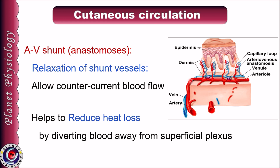Blood from the arteriole flows in one direction, passes through the shunt vessel, and flows in the venule in the opposite direction — this is called counter-current blood flow. This counter-current flow helps in reducing heat loss from the body by diverting blood away from the superficial plexus.